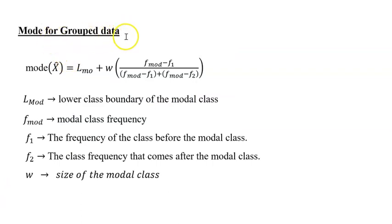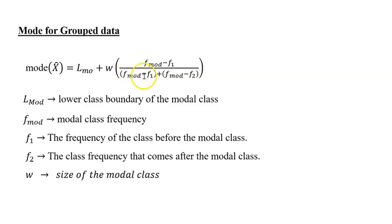Mode for grouped data. When data is grouped, you use the lower class boundary for the modal class, plus the class width for the modal class, times the modal class frequency minus the frequency before the modal class, over the modal class frequency minus the frequency before the modal class, plus the modal class frequency minus the frequency that comes after the modal class.